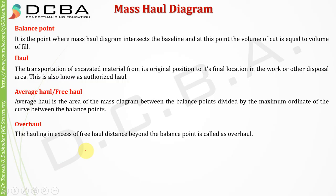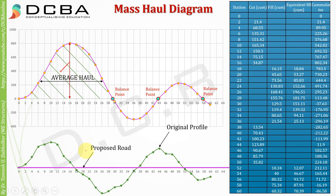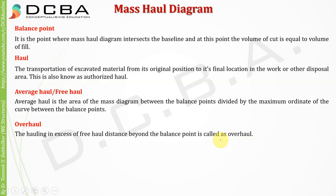Overhaul is the hauling in excess of the free haul distance beyond the balance point. So this extra distance beyond the balance point is called overhaul, because after that point you need some extra effort to fill the remaining section.